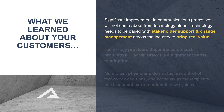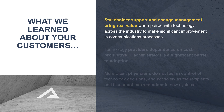So the solution here is to keep things highlighted, but rearrange the words so that those highlights fall at the beginning of that text block. So 'stakeholder support and change management bring real value' gets read first, and then if the audience is more interested, they can keep reading and get a little more detail.